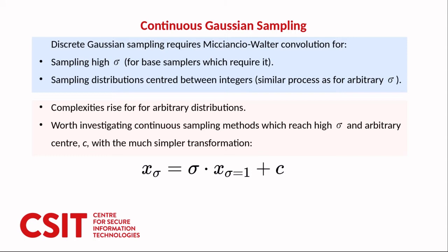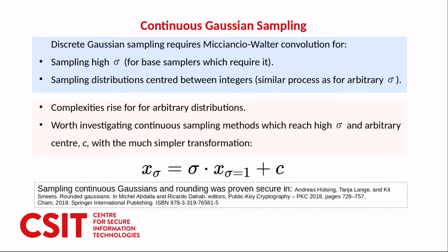One method of doing this is using a continuous Gaussian distribution whereas the Knuth-Yao is a discrete Gaussian distribution method. If we sample from a continuous distribution then what we can do is simply transform a sample from a low standard deviation by multiplying by the sigma and adding the center. Sampling continuous Gaussians and rounding the result to an integer was proven secure in lattice based constructions by Peikert et al. So the use of these continuous distributions is known to be secure.